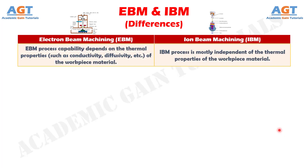Number 9. Electron Beam Machining process capability depends on the thermal properties, such as conductivity, diffusivity, etc., of the workpiece material, whereas Iron Beam Machining process is mostly independent of the thermal properties of the workpiece material.